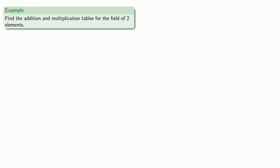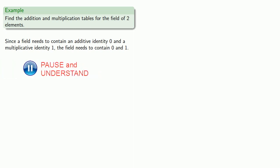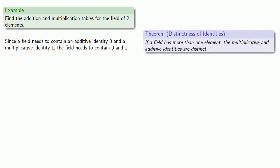Let's find the addition and multiplication tables for a field of two elements. Since a field needs to contain an additive identity 0 and a multiplicative identity 1, our field needs to contain the elements 0 and 1. We've shown that if a field contains more than one element, then the multiplicative and additive identities must be distinct, so our field contains just the two elements 0 and 1.